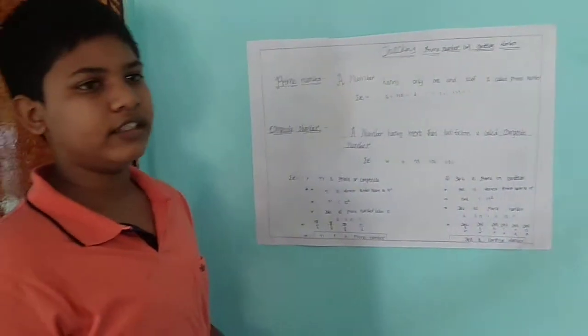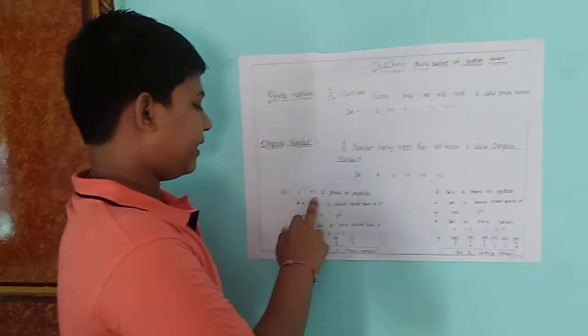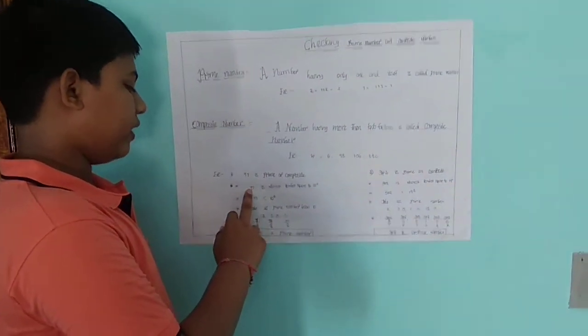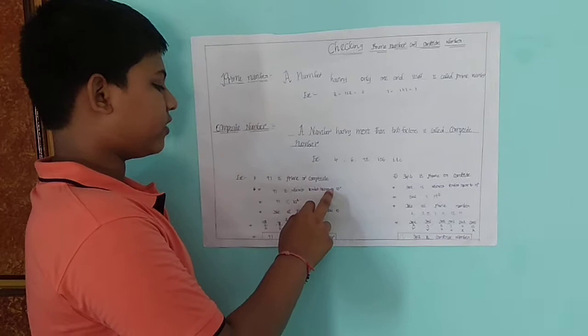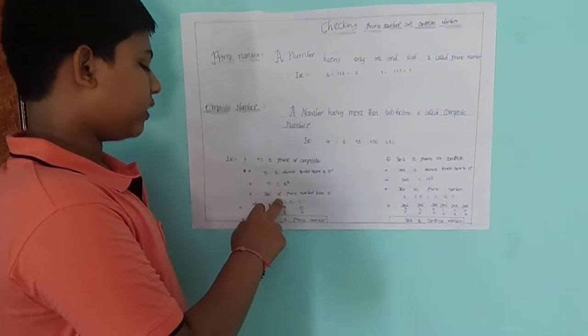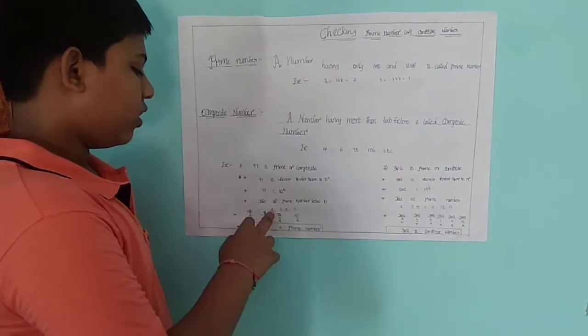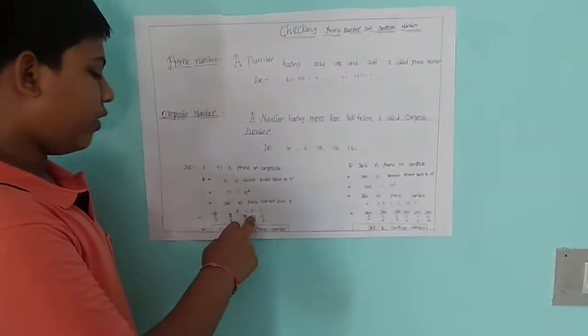How do we determine if a number is composite or prime? For example, take 97. 97 is nearest to the perfect square 10². You should take all prime numbers below 10: 2, 3, 5, 7.